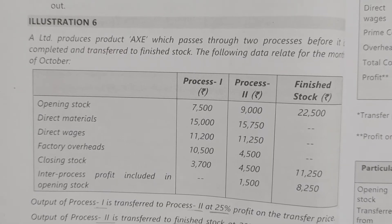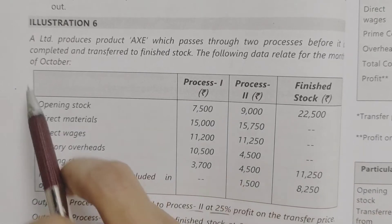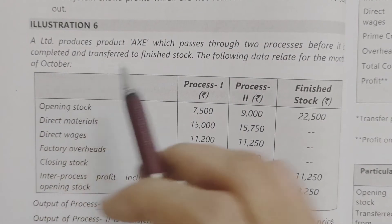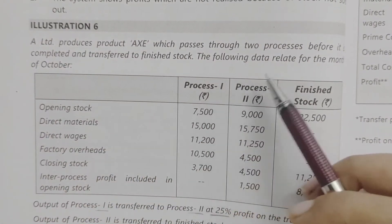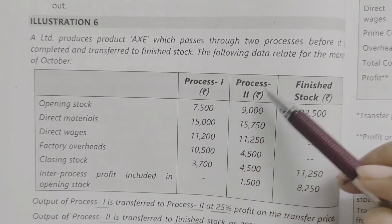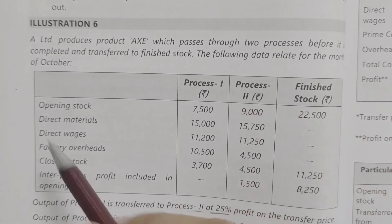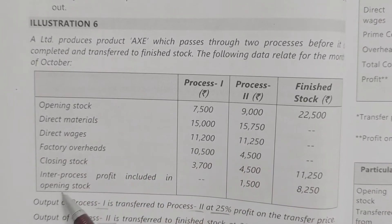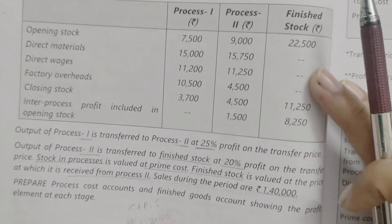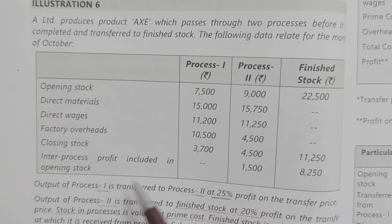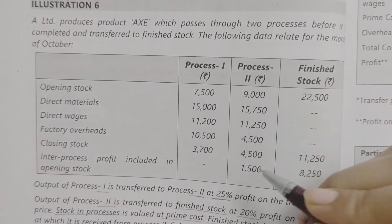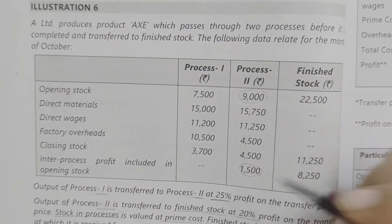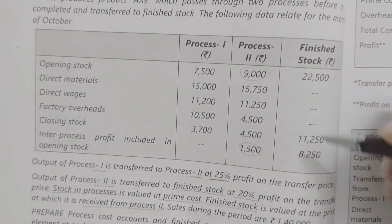Illustration 6: Inter-process profit. A Limited produces product X which passes through two processes before being completed and transferred to finished stock. The data relates to the month of October covering Process 1, Process 2, and finished stock — including opening stock, direct materials, direct wages, factory overhead, closing stock, and inter-process profit included in opening stock. Process 2 opening stock has a profit element of 1,500.